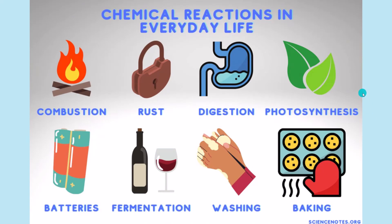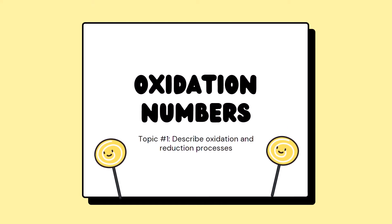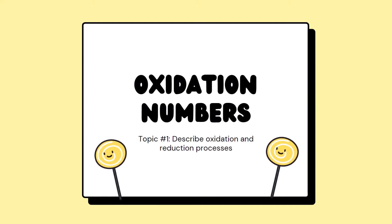Here are some common redox reactions in our everyday lives. In this unit, we will mainly discuss the rusting of iron and how batteries function. There are some subtopics in each topic. The first one is oxidation numbers.